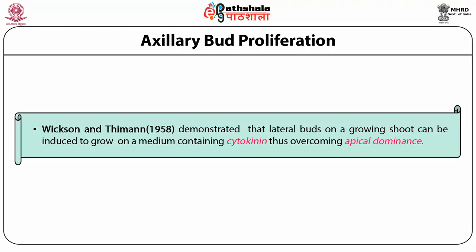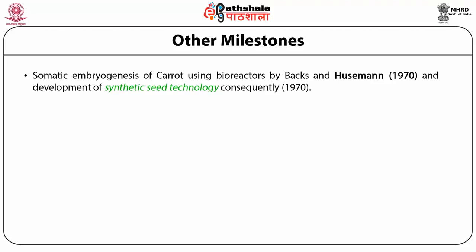Simultaneously there was another school of thought — through callus you can get multiplication much faster. On certain media it was possible to get formation of embryo-like structures with a shoot on one end and a root-like structure on the other end. Since these were formed from somatic cells they were called somatic embryos. These somatic embryos were perceived to have a lot of application because they were like embryos — they were called synthetic seeds. Why not encapsulate them into some nutrient media, store them, and grow them like seeds? This came with a lot of enthusiasm but with limited commercial application — there were issues related to genetic uniformity as well as storage and germination.